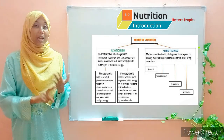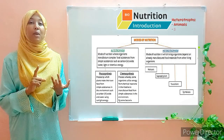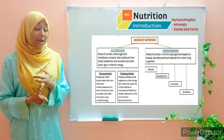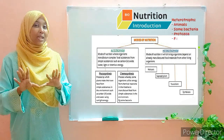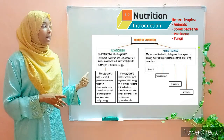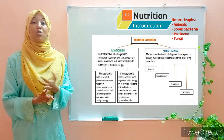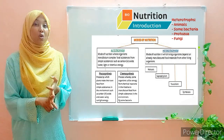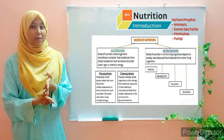Heterotrophs can be animals, some bacteria — since some bacteria are autotrophic while others are heterotrophic — protozoa, and lastly fungi.